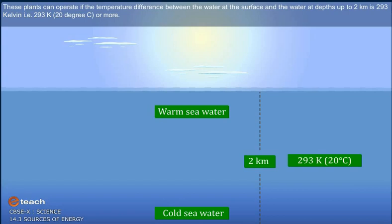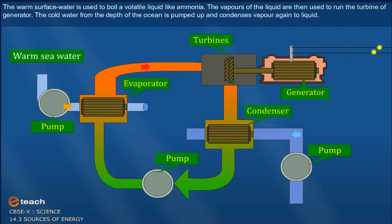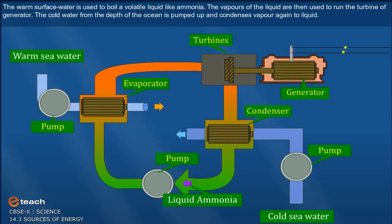293 K, that is 20 degrees Celsius or more. The warm surface water is used to boil a volatile liquid like ammonia. The vapors of the liquid are then used to run the turbine of generator. The cold water from the depth of the ocean is pumped up which condenses vapor again to liquid.